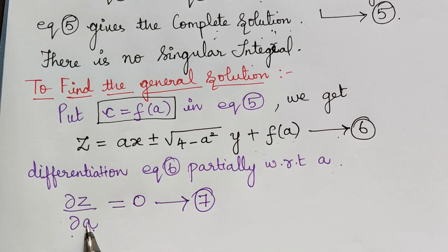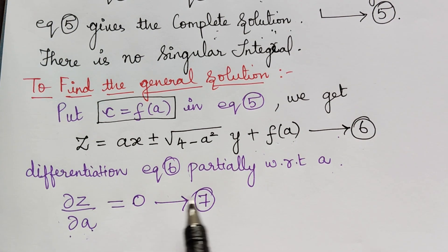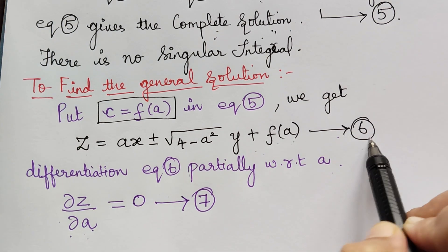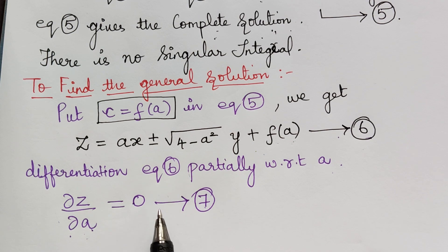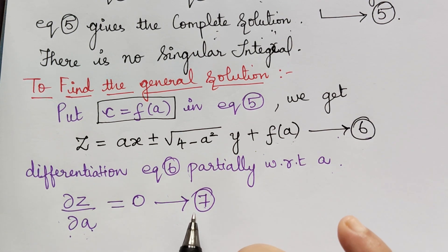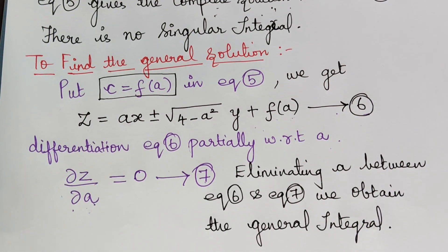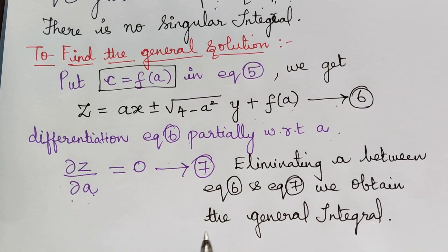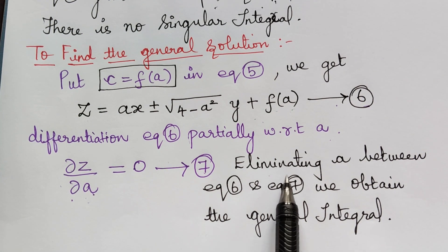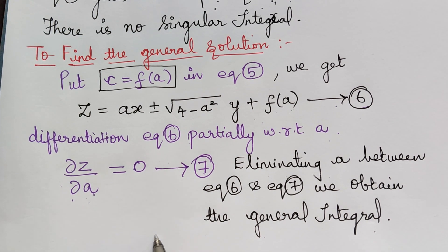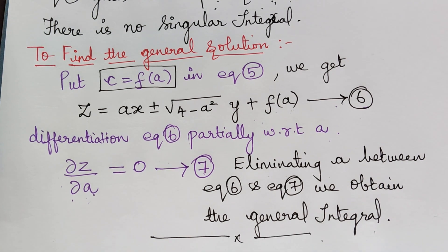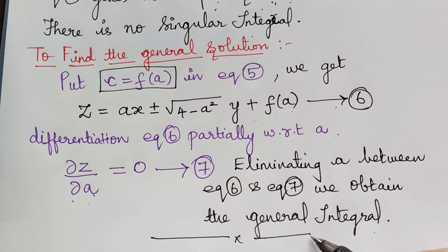This equation after differentiation will be in terms of a. From equations 6 and 7, we have to eliminate a in order to find the general integral. If we are able to show this elimination, we can do that; if not, we can simply write that eliminating a between equations 6 and 7 gives the general integral. With this, the problem is completed. This is the method for solving equations of the form f of p, q is equal to 0.